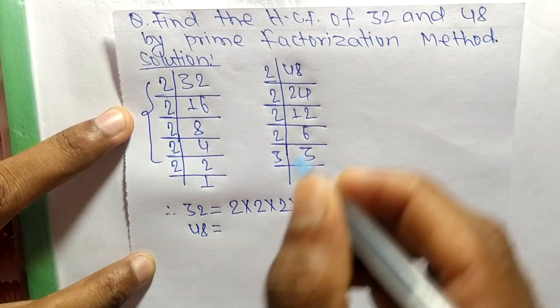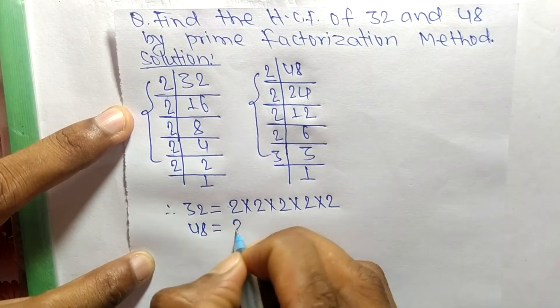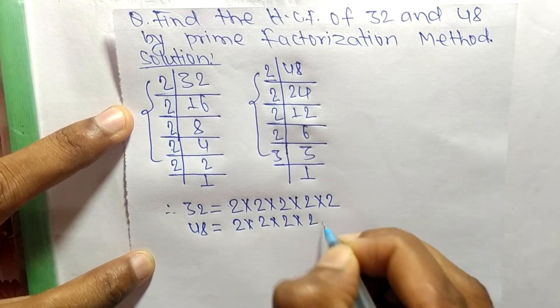48 is equal to 2 times 2 times 2 times 2 times 3, which is 4 times 2 times 3.